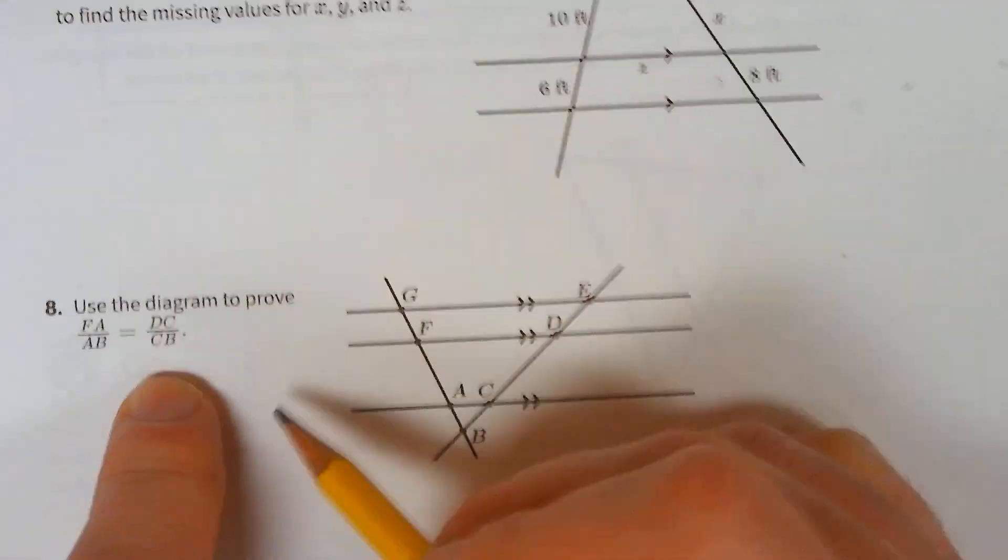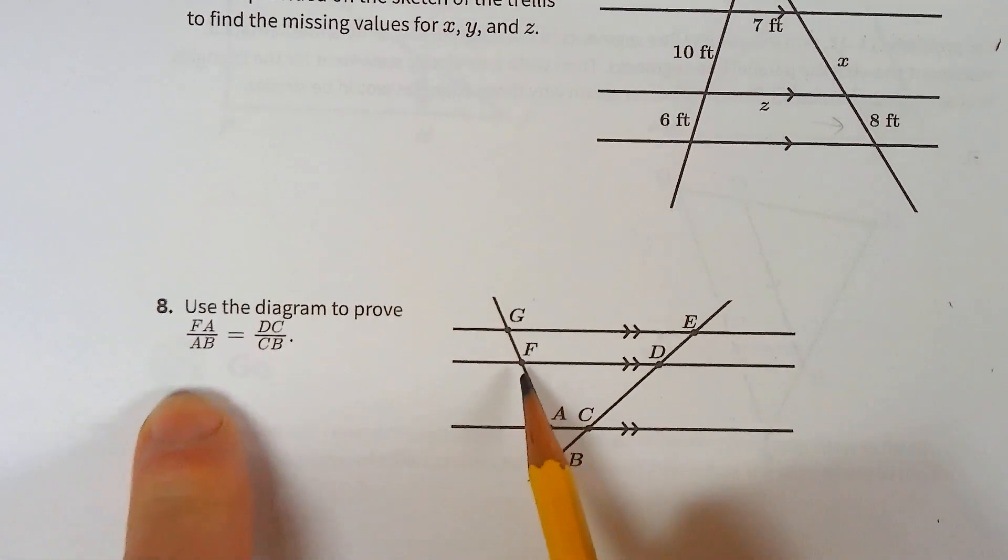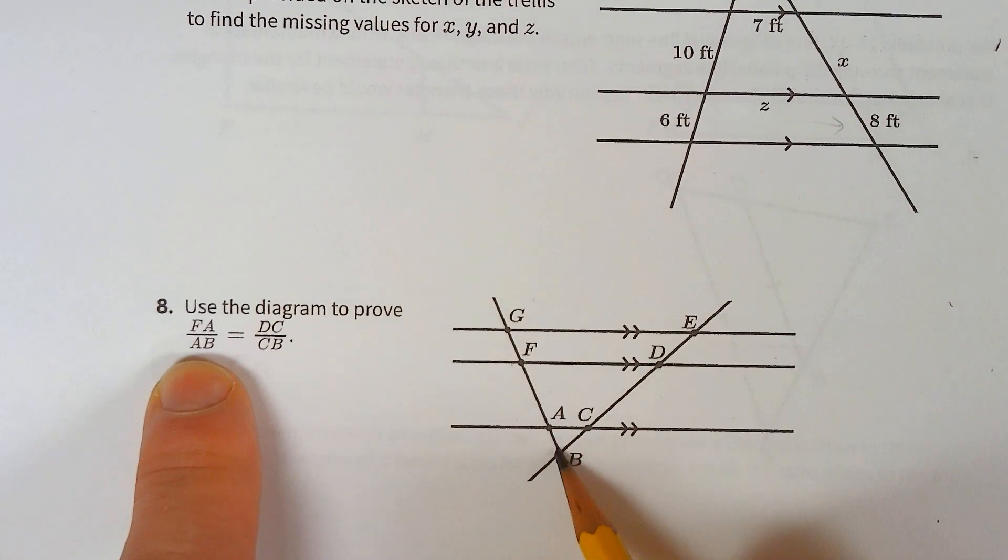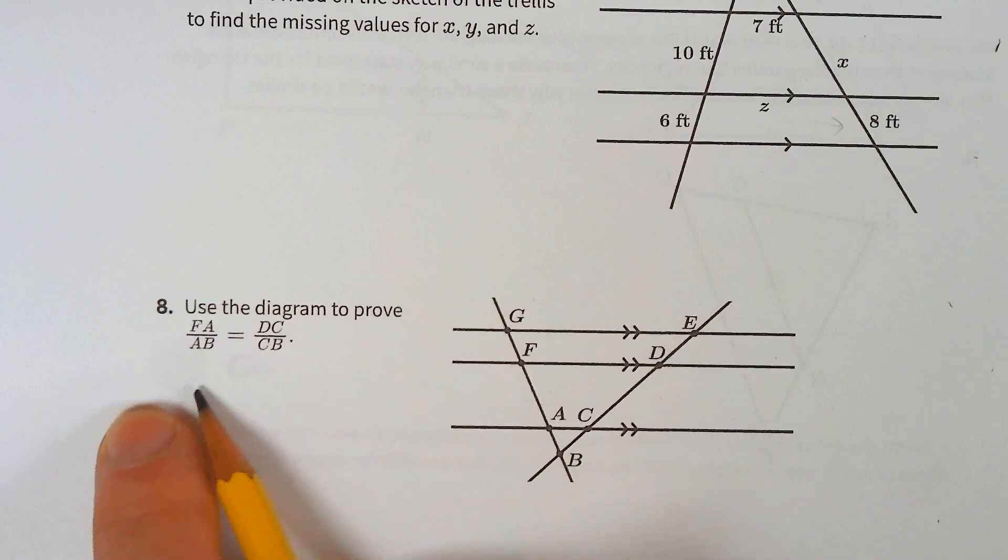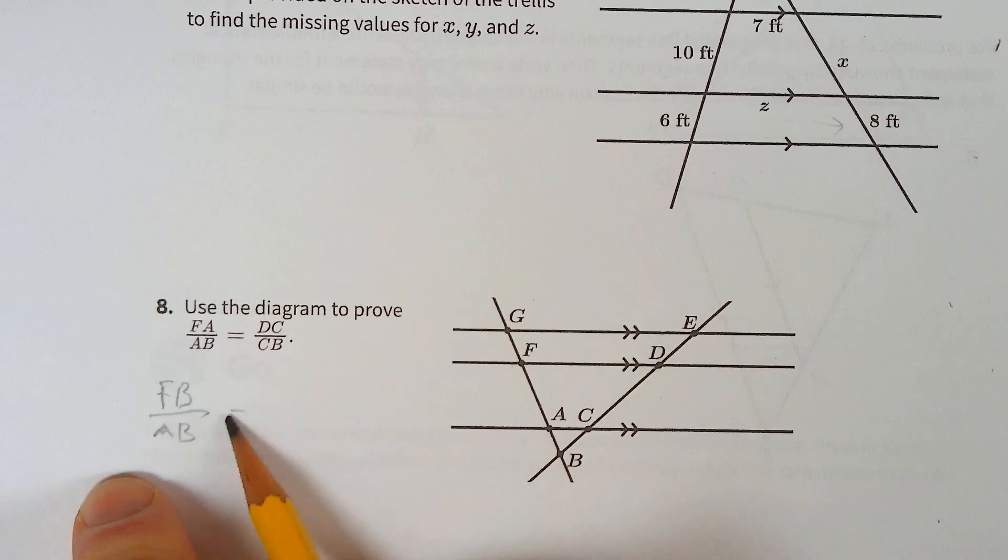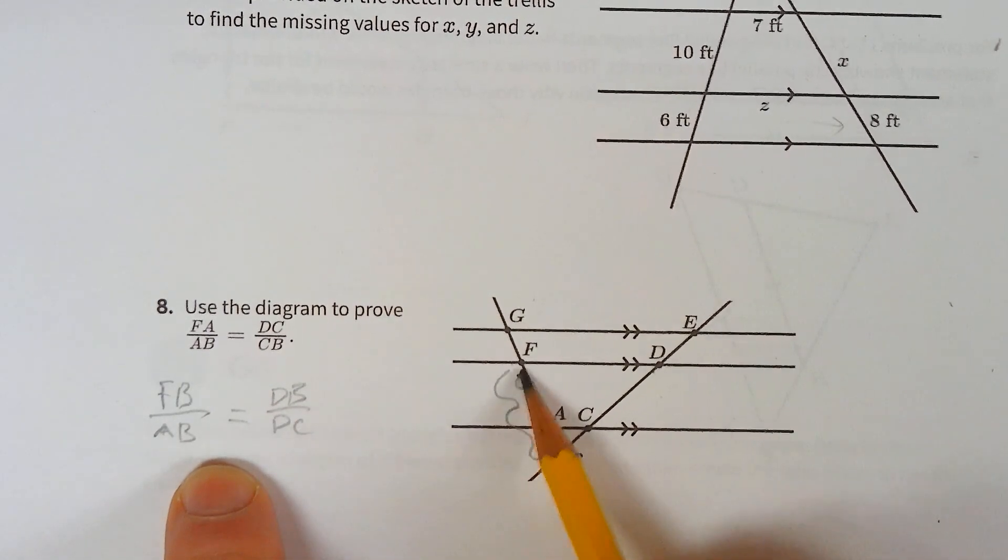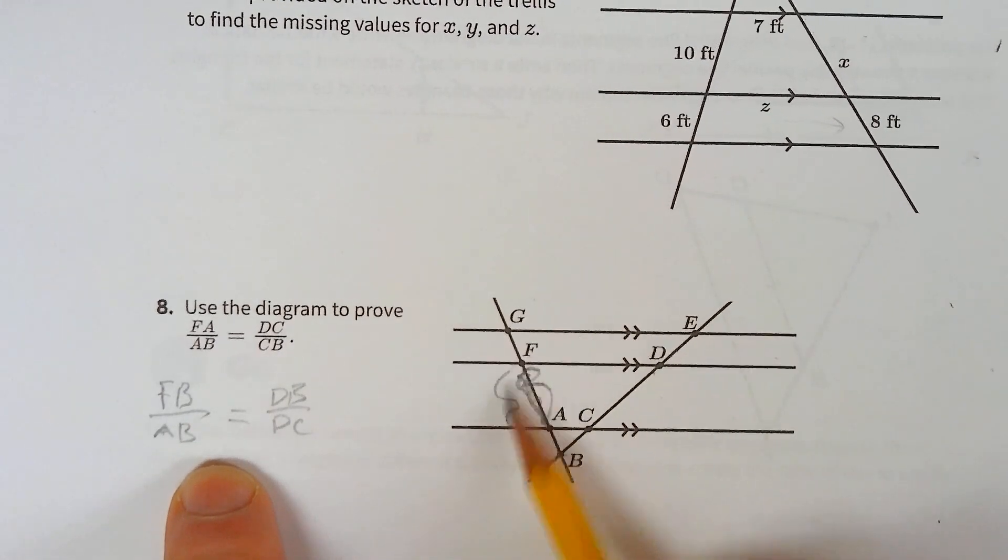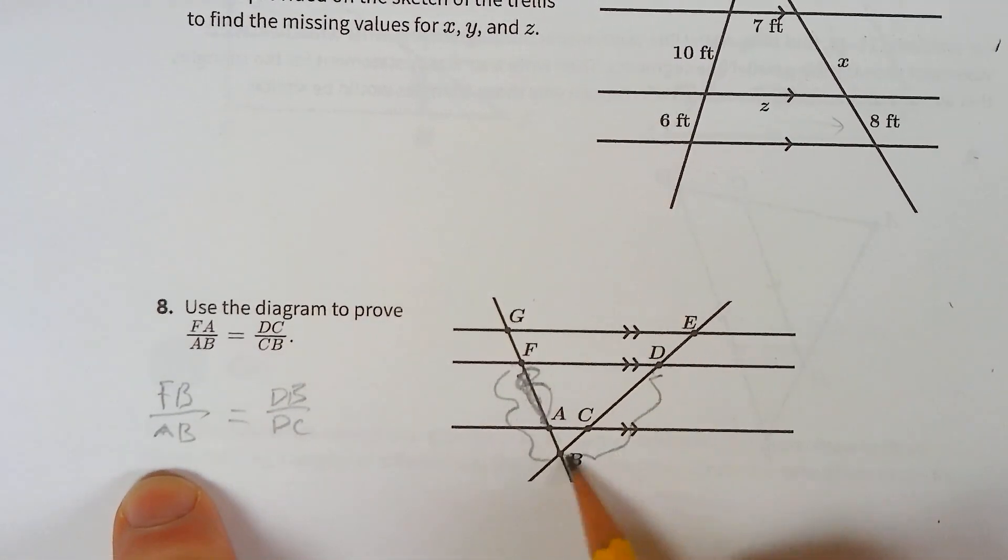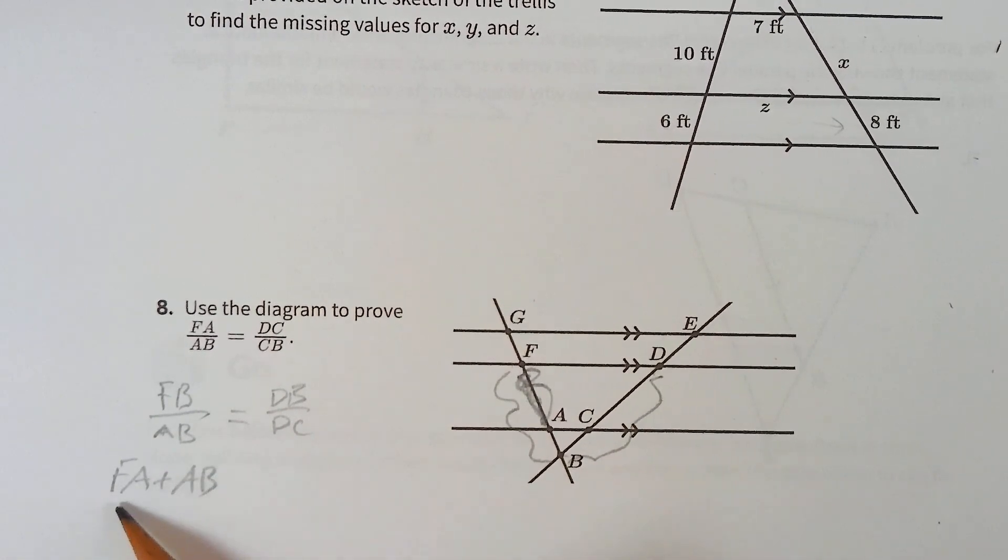For this one, this is the same problem as in the lesson, basically. FA over AB - you could start with something else - FB over AB equals DB over DC. So we're using the full length, but we want the chunk. We're starting with the full thing. On both sides, we'll rewrite FB as FA plus AB over AB.